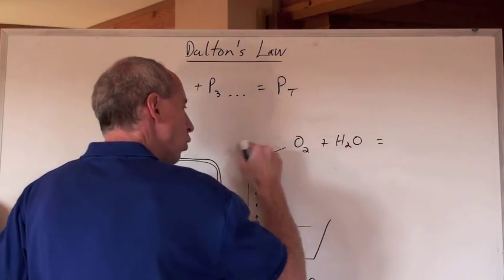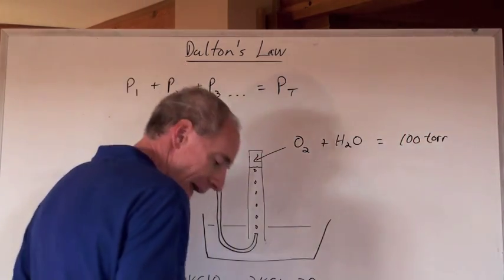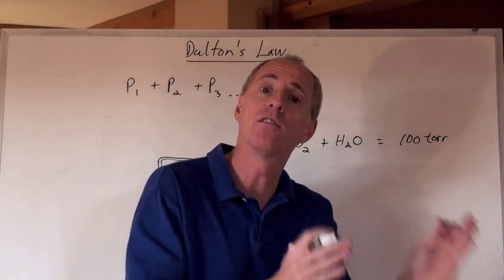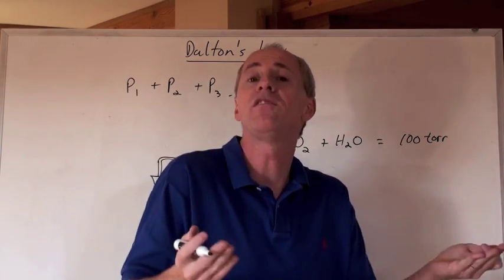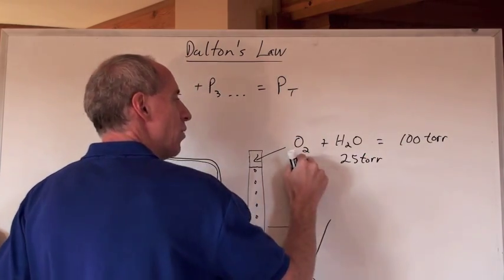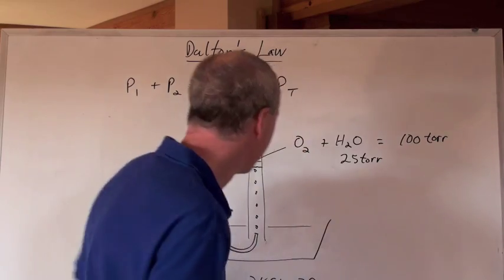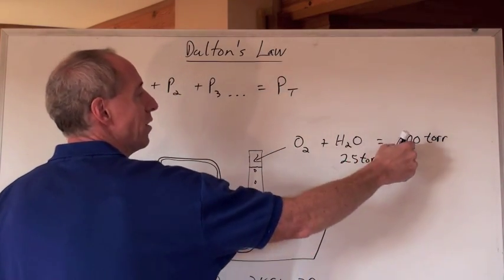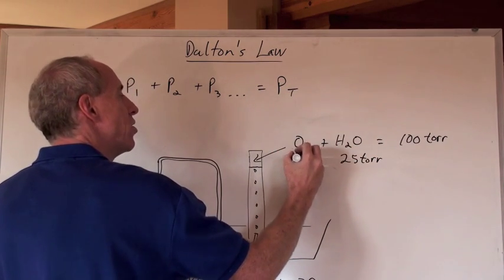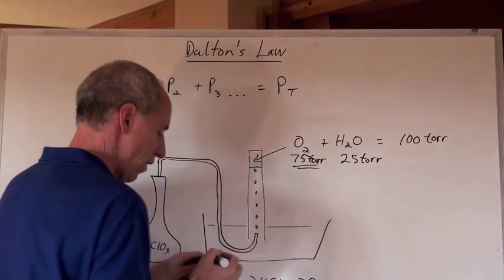If the total pressure is 100 torr, and at 25 degrees Celsius the vapor pressure of water is 25 torr, then if you're asked what the pressure of the oxygen is, you know that the total pressure minus that partial pressure equals the partial pressure of oxygen at 75 torr.